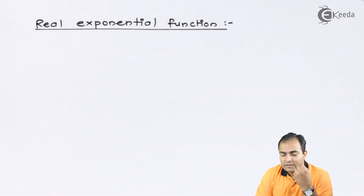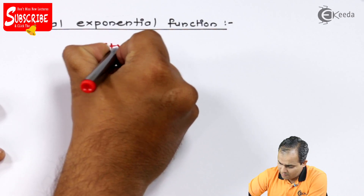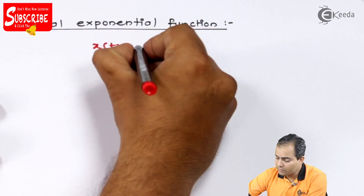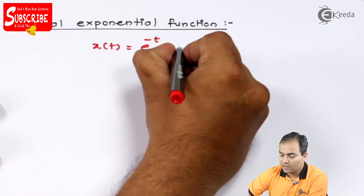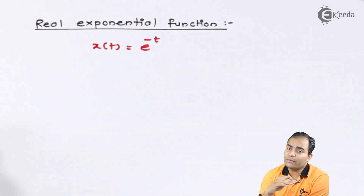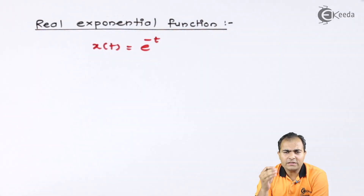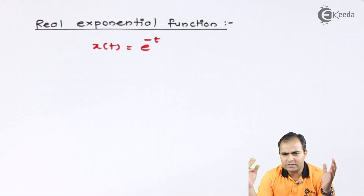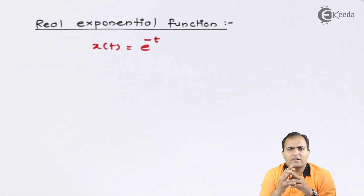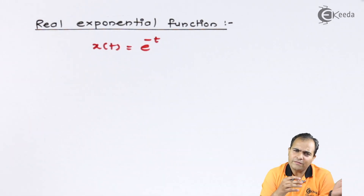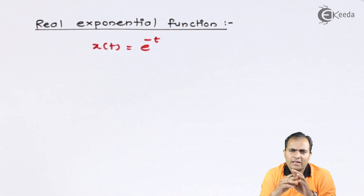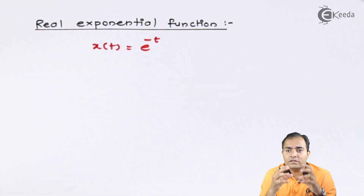The exponential function will be represented as x(t) = e to the power minus t. I am not going to write the time t because you can plot this graph from minus infinity to plus infinity, or from minus infinity to 0, or from 0 to infinity, or for a limited period. The basic important thing is how this graph is drawn or plotted.